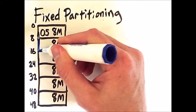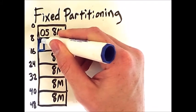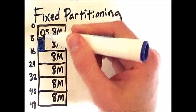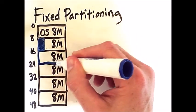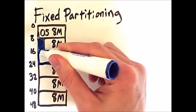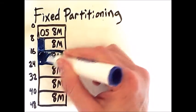We could have a small process occupying this partition, and then another process could come in that's fairly large and occupies the majority of a partition.